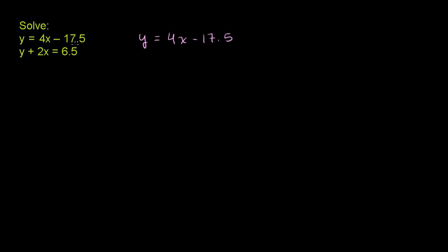So what we can do is substitute this value for y into this equation. Let me be clear what I'm doing. The second equation is y plus 2x is equal to 6.5. We know that y has to be equal to 4x minus 17.5.